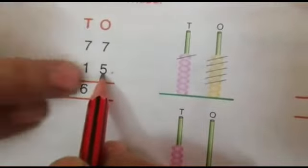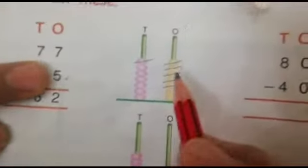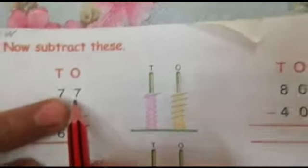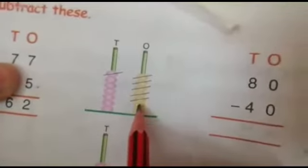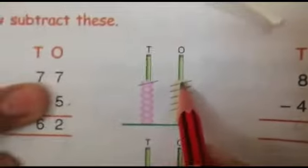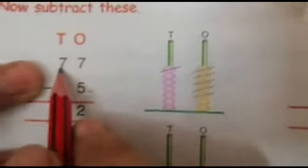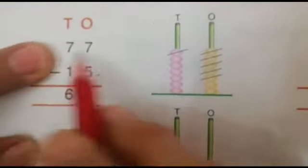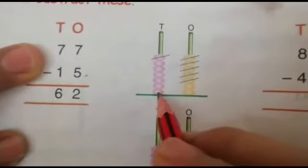First we have to draw the beads in 1s place. How many beads we have to draw? 7. 1, 2, 3, 4, 5, 6, 7. And next how many 10s are there? 7. 7 beads we will draw in 10s place.